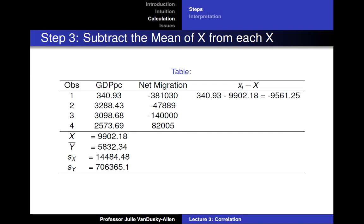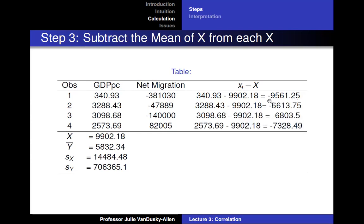Next, you subtract the mean of x from each x. 340 minus 9902.18 equals negative 9561.25. And you do this for the rest of the observations.